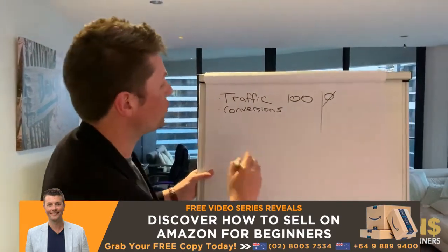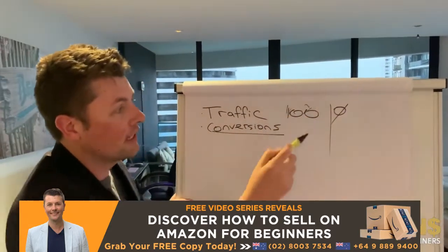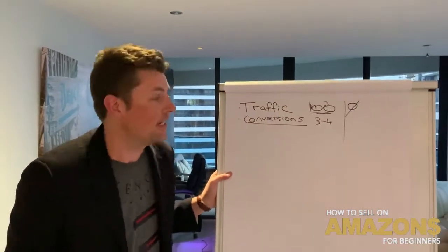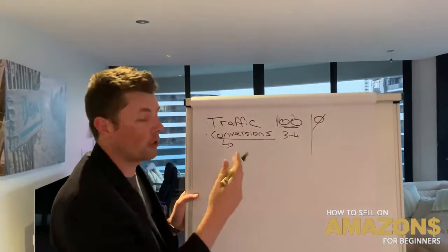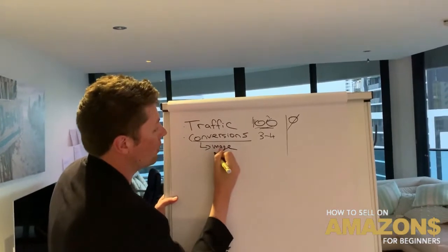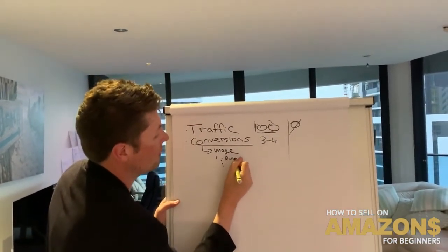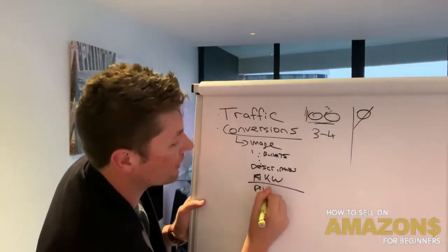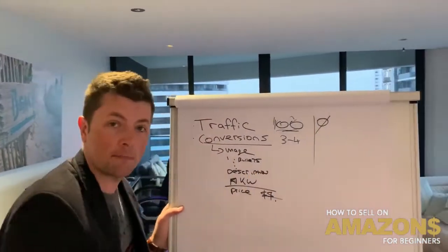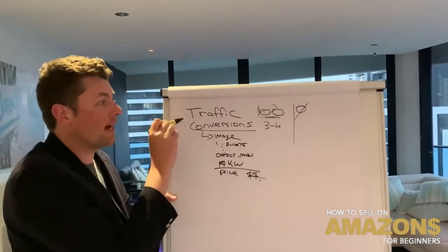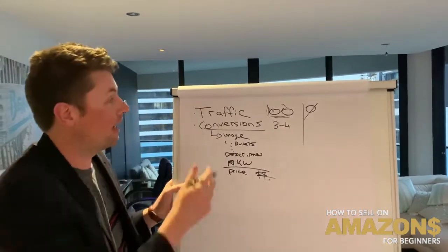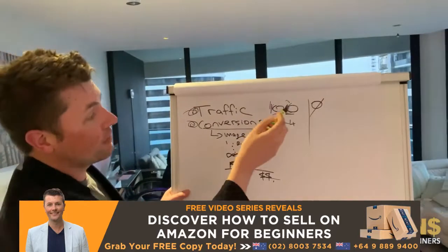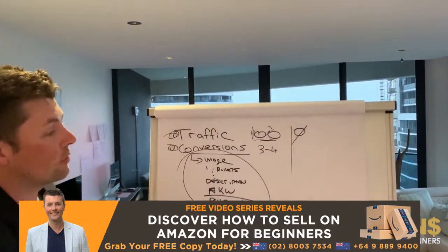For conversions — let's say you're getting a hundred people visiting your listing and you're only getting three or four sales. That's a conversion rate of three or four percent, which means you need to improve that. It could be your images, your bullet points, the description, the keywords, or the price. There are a lot of different reasons. You can experiment by lowering the price. First of all, find out exactly why — are you getting traffic, and if you are, what is your conversion rate? If you're getting traffic but not enough conversions, there's something you can improve.